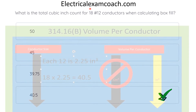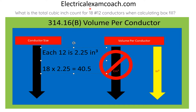To find this answer, we head to 314.16(b). We start on the left-hand side and find our size conductor. Then we come all the way over to the cubic inches column and select our individual conductor value. Each 12-gauge conductor is 2.25 cubic inches. We take our 18 conductors, multiply by 2.25 cubic inches, and we end up with 40.5 cubic inches.